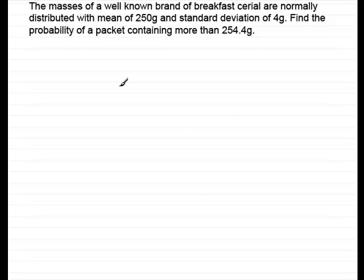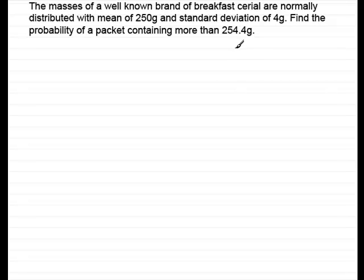Here's the example. The masses of a well-known brand of breakfast cereal are normally distributed with a mean of 250 grams and a standard deviation of 4 grams. Find the probability of a packet containing more than 254.4 grams.